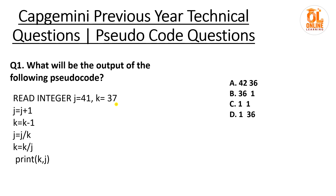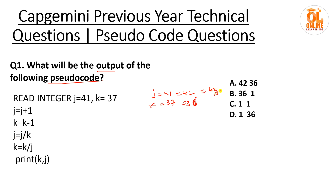Coming to the first question for today: what will be the output of the following pseudocode? We have integer j equal to 41, k equal to 37. Then j becomes j plus 1, so 41 becomes 42. k becomes k minus 1, so 37 becomes 36. Then j equals j divided by k, meaning 42 divided by 36.